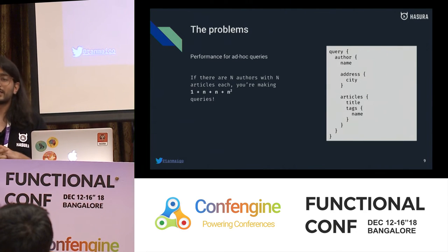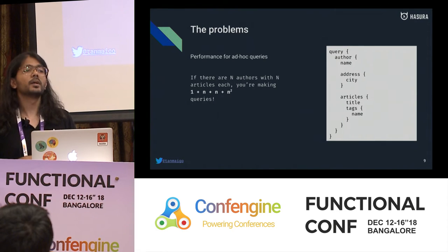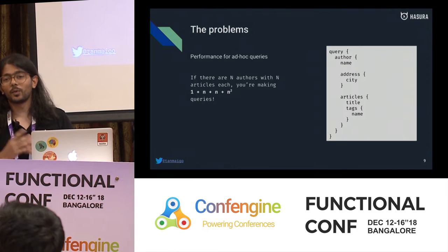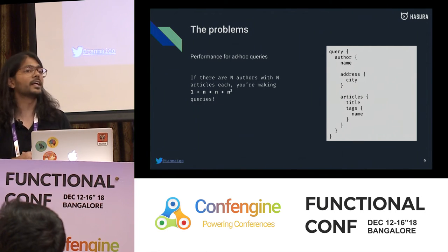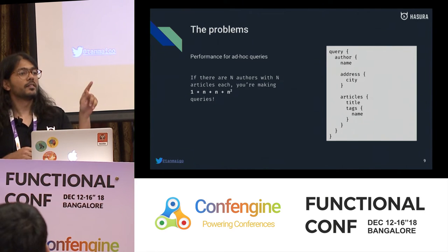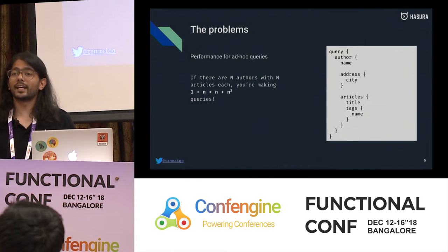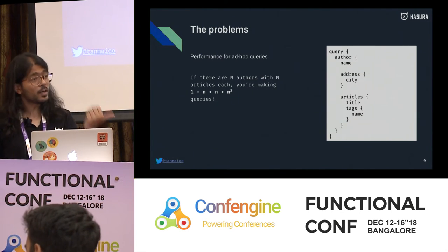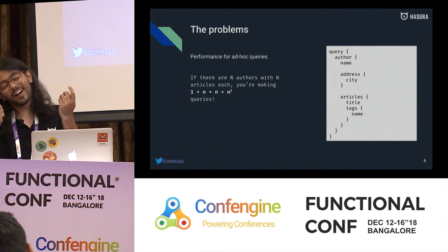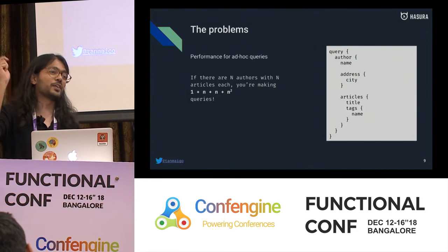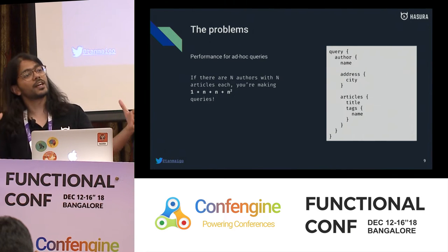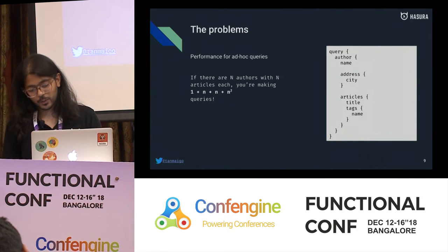That's because in the ORM I was fetching articles for each author in a loop — hitting the database N times. If I have N authors each with tags, I'm hitting the database N times for articles and then N times again for tags for each article. You very quickly start killing your database. So that's one problem with the typical approach to writing GraphQL — and then you wanted to use GraphQL but died because your DBA killed you.